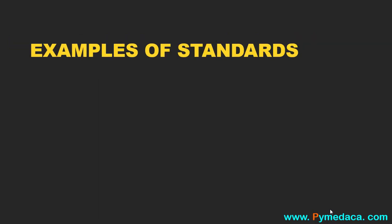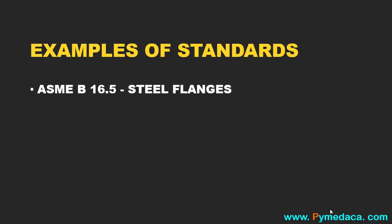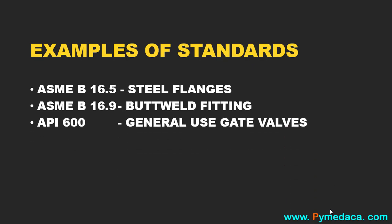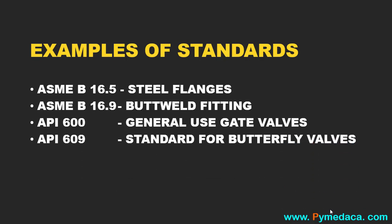Now let's see the examples of standards. ASME B16.5, which is for steel flanges, is a standard. ASME B16.9, which is for butt weld fittings, is a standard. API 600 is for general use gate valves, and API 609 is the standard for butterfly valves.